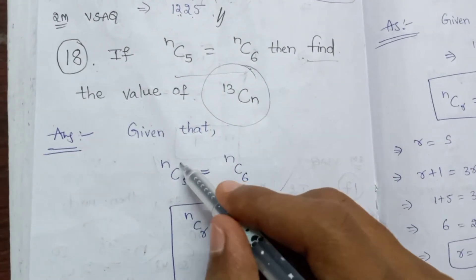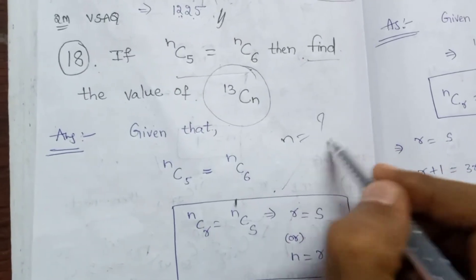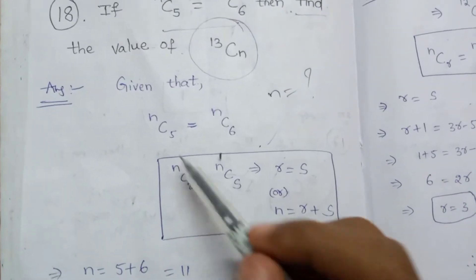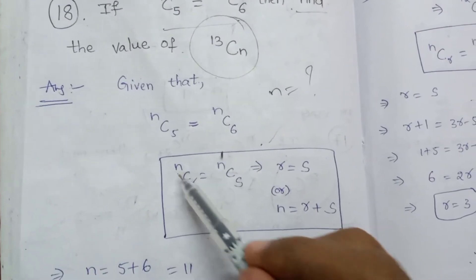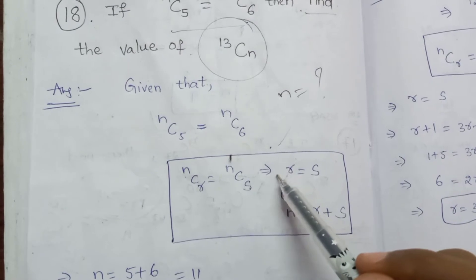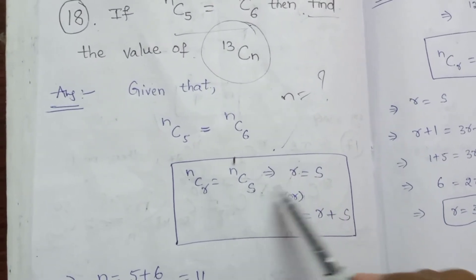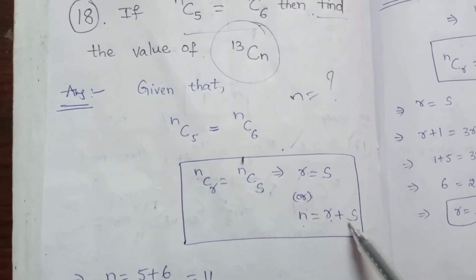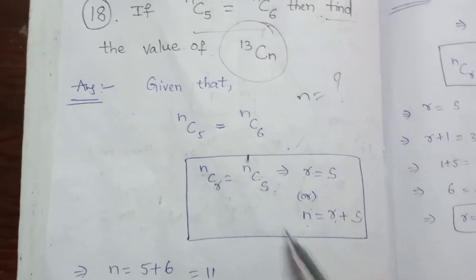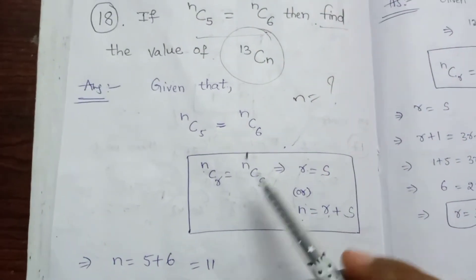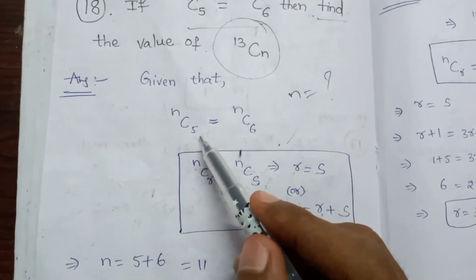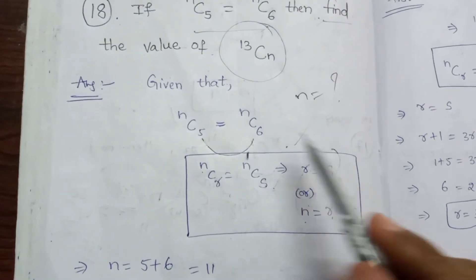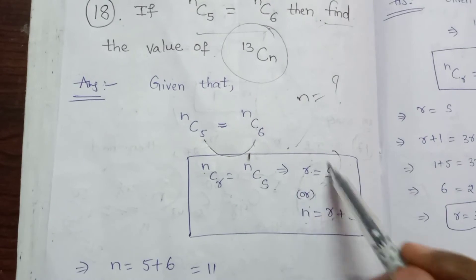We will find the value of 13Cn. If nCr is equal to nCs, then we use this formula: r is equal to s, or n is equal to r plus s. This is the condition.